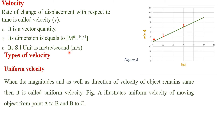Types of velocity. Uniform velocity: when the magnitude as well as direction of the velocity of an object remain the same, it is called uniform velocity. Figure A illustrates uniform velocity of a moving object from point A to B and from point B to C — the magnitude and direction of velocity remain the same throughout.